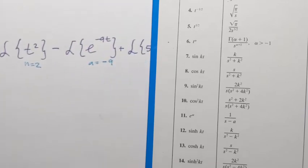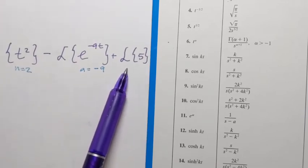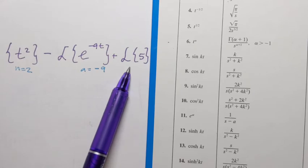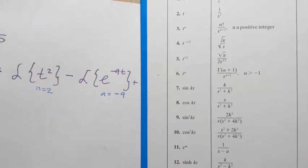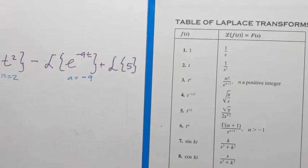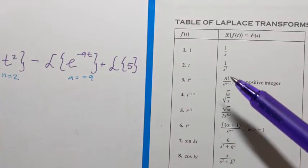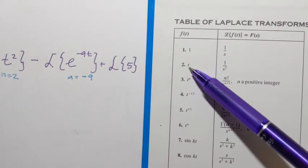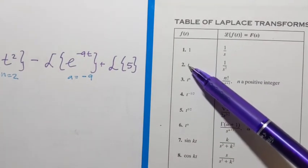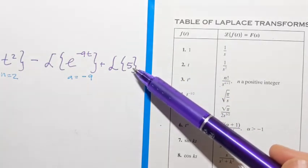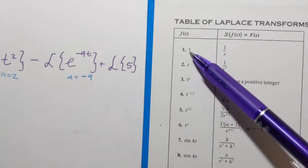And then finally, the last one, plus, it's Laplace transform of just the constant 5. And as I can see in the table, I don't have constant function described in general. I'm trying not to confuse it with the second one. This is t, this is a variable, right? I don't have a variable here. It's the constant. I only have Laplace transform of 1.